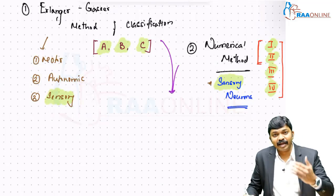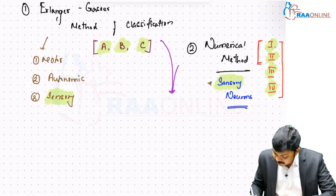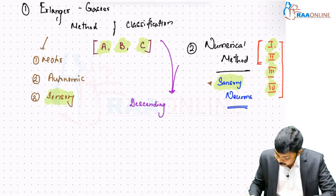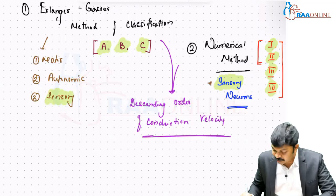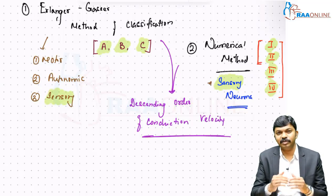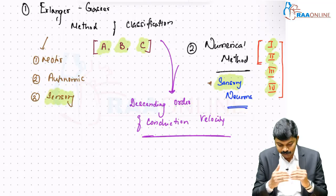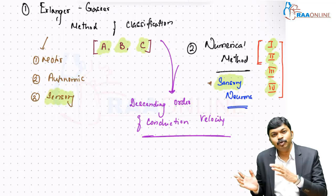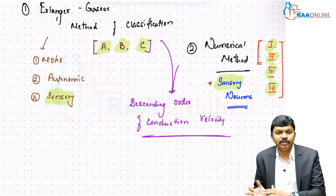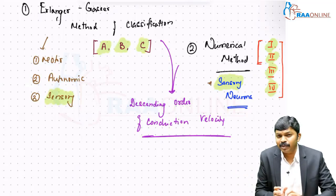When it comes to the hierarchy, the classification goes in descending order. It happens in descending order of conduction velocity. Which means the neurons with highest conduction velocity are organized at the top of the table. As the table keeps going at the bottom, there are going to be neurons which have the least conduction velocity.